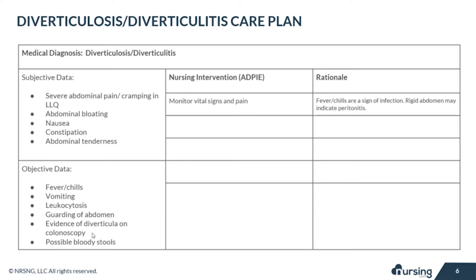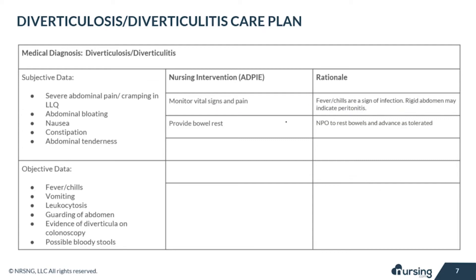Now let's look at our nursing interventions along with the rationales for each. We're going to monitor the vital signs and the pain levels in our patient — we want to look out for fevers, as fevers and chills are both a sign of infection. Your patient might experience a rigid abdomen, which could indicate peritonitis, which is pretty serious. We also want to try to provide bowel rest — keep them NPO to rest those bowels, then advance as tolerated and ordered by the doctor.